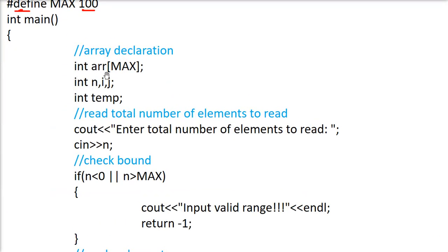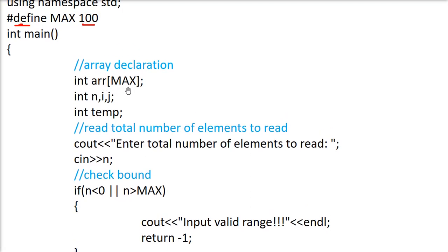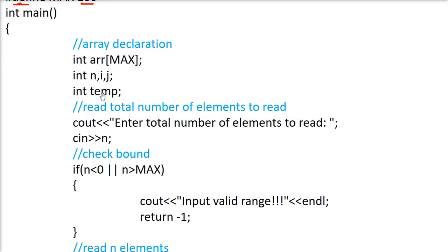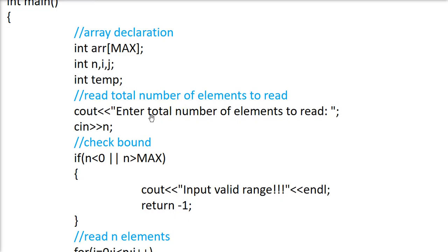We have an array. As we said we have to have an array. Now this array can have some maximum size - the size of the array has to be defined. Now we have certain variables. First we will ask the user to enter the total number of elements to read. How many numbers he wants in the array. So he says n.